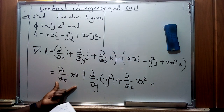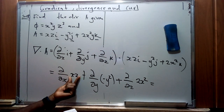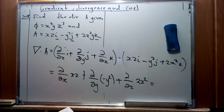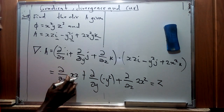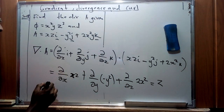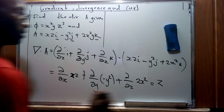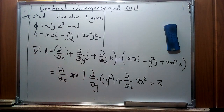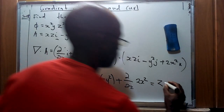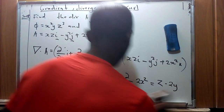Differentiating the x component xz with respect to x gives us z, since the derivative of x is 1. For the second term, differentiating negative y squared with respect to y gives us negative 2y.